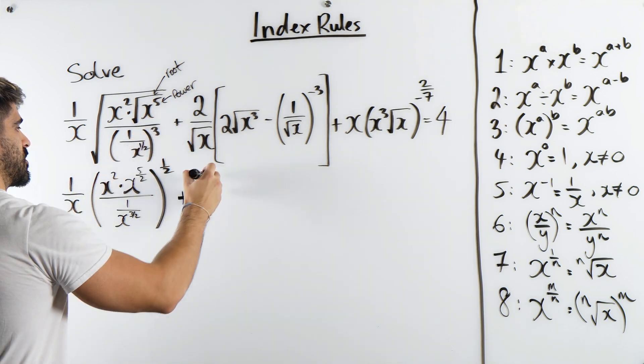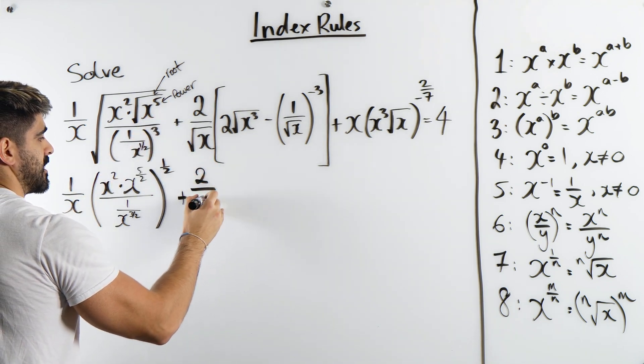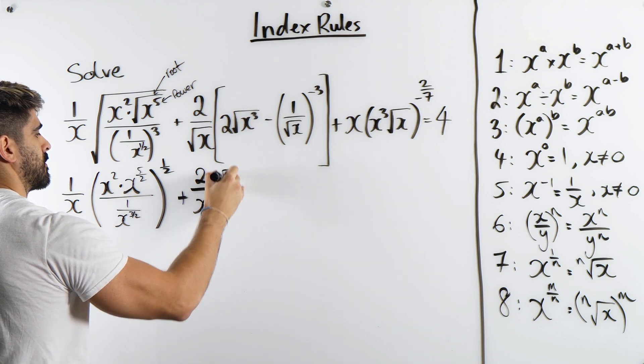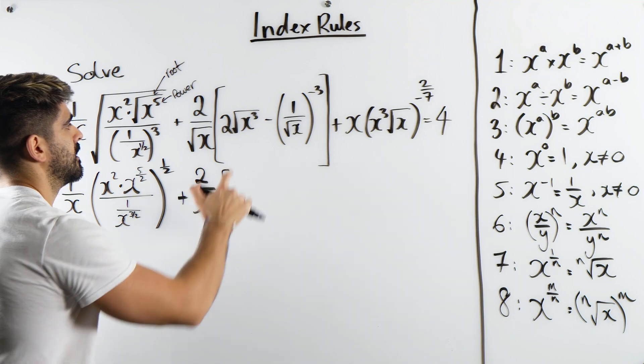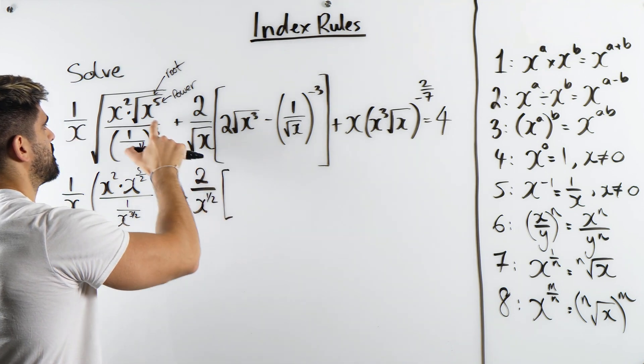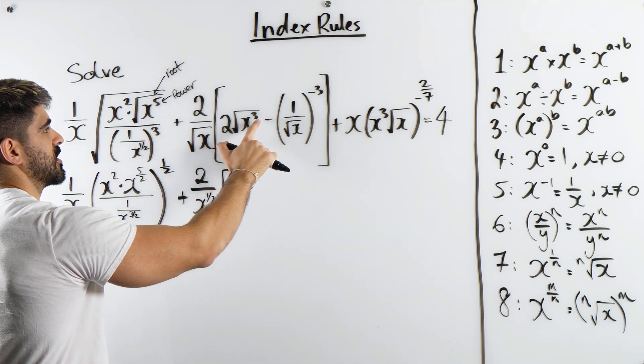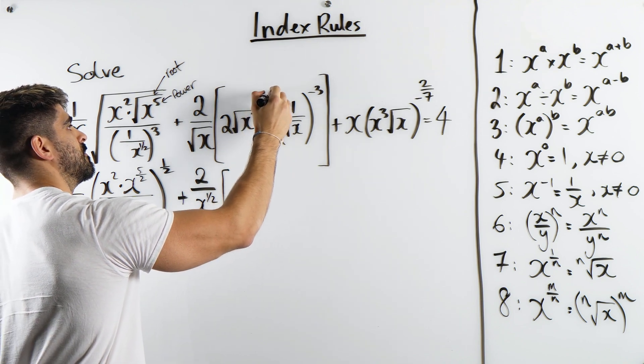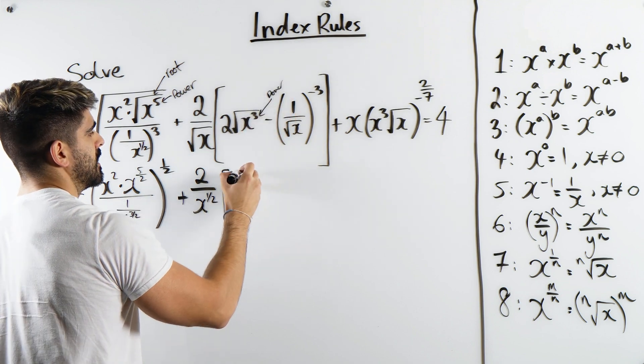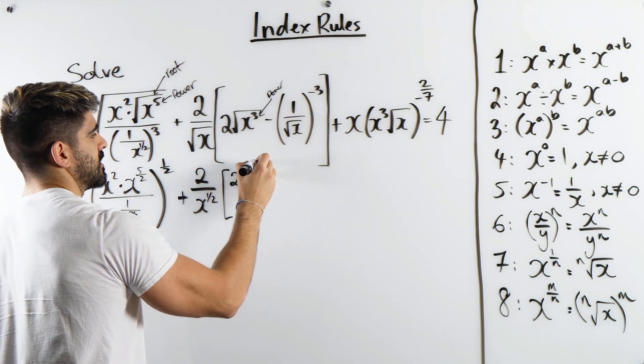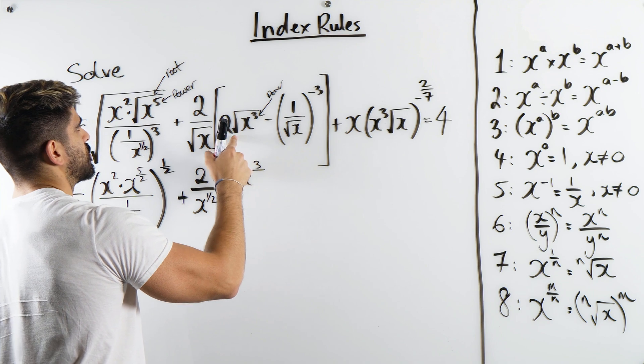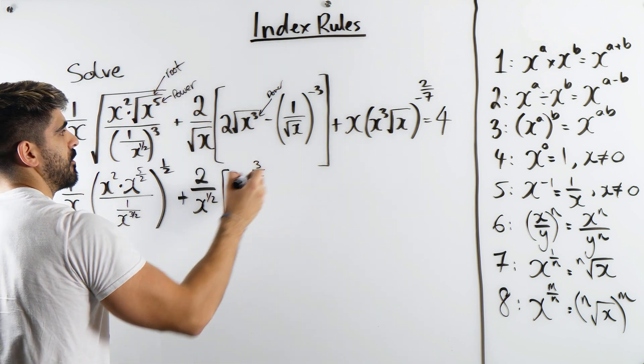Plus 2 over root x. I'm just going to write 2 over x to the power of a half. Here, this is just the same as what we did with this. It's just the power section here is 3. So it would be 2x, then 3, then the root. Remember the root section is power half.